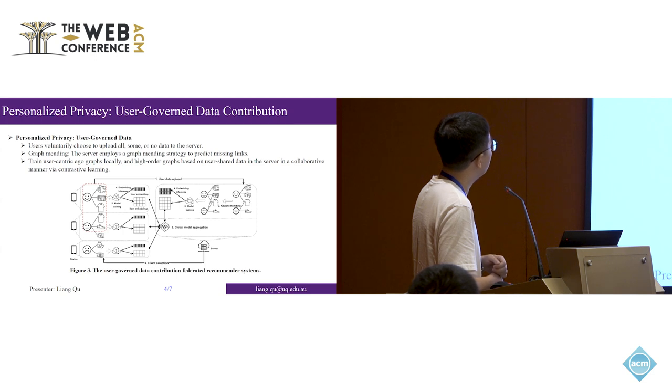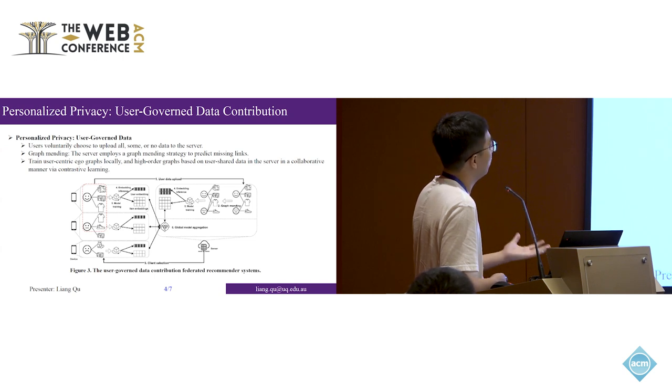On the other hand, there are many overlapping items and users between the local device and the global server, because of the shared items and users. For those shared items and users, we can learn two embeddings from the local views and the global views separately. We can use contrastive learning techniques to learn better embeddings for these items. For example, for this item, we can learn the embedding from the local device for the local view, and learn the global view, and construct the positive pair of these items.